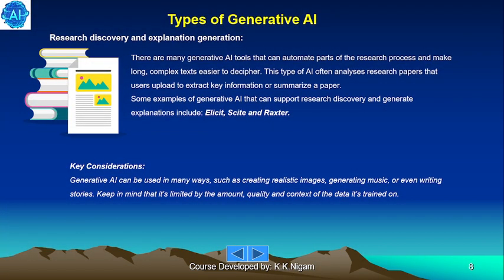Research, Discovery and Expression Generation. There are many Generative AI tools that can automate parts of the research process and make long, complex texts easier to decipher. This type of AI often analyzes research papers that users upload to extract key information or summarize the paper. Some examples include Elicit, Scite and Rackster. Key consideration: Generative AI can be used in many ways such as creating realistic images, generating music or writing stories, but keep in mind it is limited to the amount, quality and context of the data it is trained on.